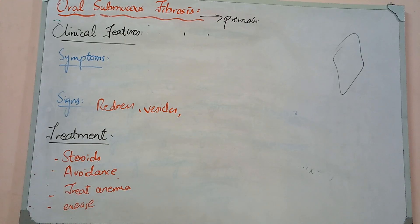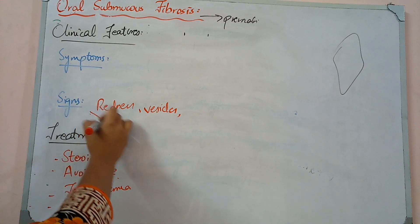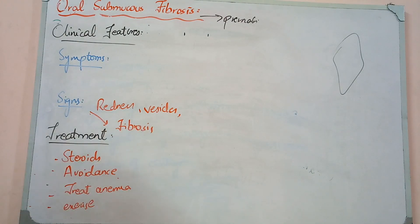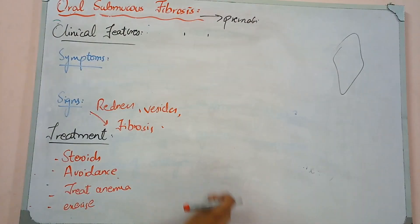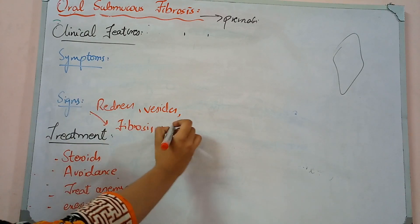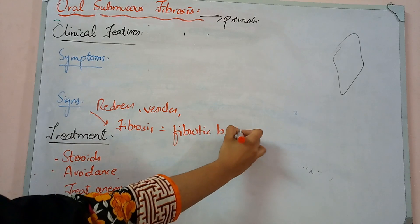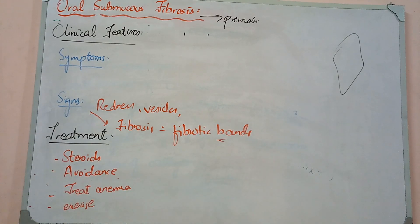Soft palate and buccal mucosa show redness and vesicles. When deep mucosa is involved, if you put your hand in the area, you feel thickened fibrotic bands. One characteristic feature in advanced cases is trismus, difficulty opening the mouth. This condition is very problematic.